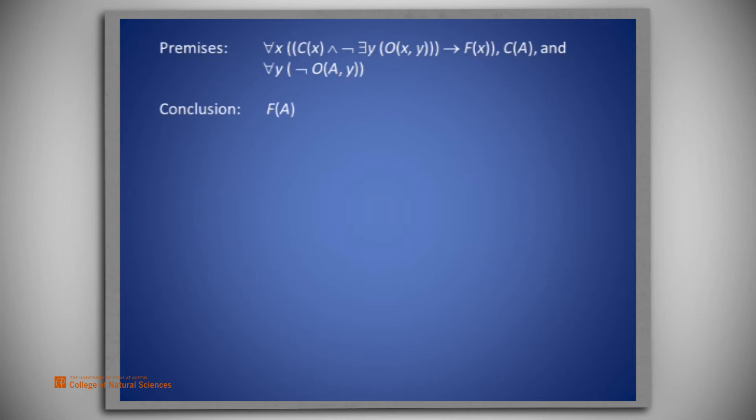But what about the other statement in the antecedent? Not there exists y, such that O(A, y). How would we get it? The trick is to look at the third premise, which is precisely what we need were we to do a quantifier exchange. That is, for all y, not O(A, y) is the same as not there exists y, such that O(A, y). So it appears that first by instantiating x to A and then by doing quantifier exchange, we might get the conclusion that we seek.